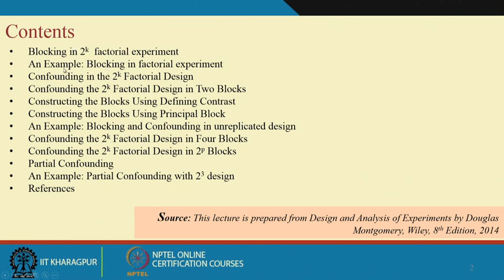Today's contents: blocking in the 2^k factorial experiment, discussed with an example; then confounding in the 2^k factorial design; confounding the 2^k factorial design in 2 blocks; how to construct blocks using defining contrast; how to construct blocks using principal block concepts; another example of blocking and confounding in unreplicated design; confounding the 2^k factorial design in 4 blocks; confounding in 2^p blocks; partial confounding and an example with partial confounding using a 2^3 design.